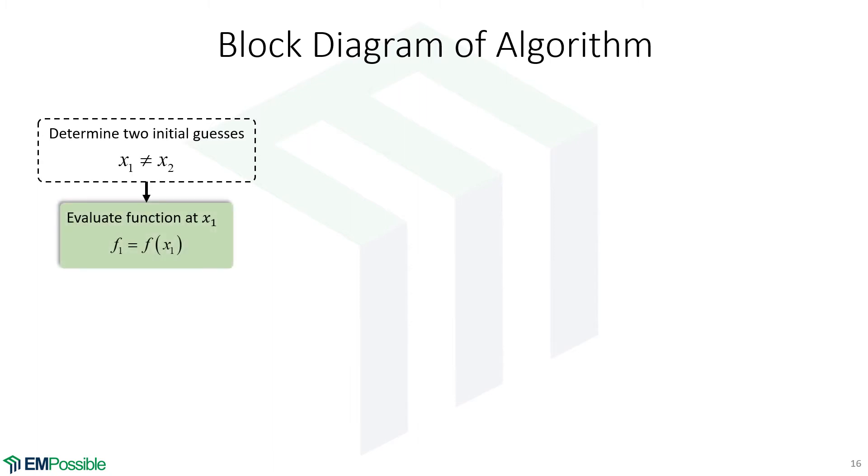At this point, we enter our algorithm. And the first thing we'll do is evaluate the function at our first point. Given that, we can enter our main loop. And the first step in the main loop is to evaluate the function at the second point.